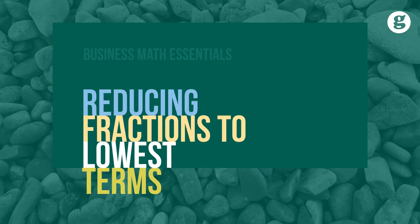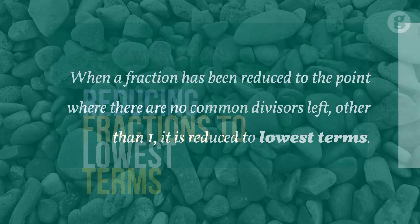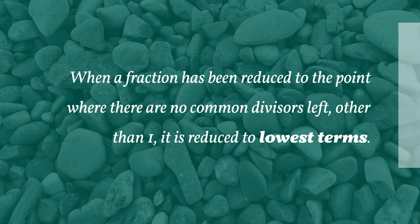Reducing a fraction means finding whole numbers, called common divisors or common factors, that divide evenly into both the numerator and denominator of the fraction. When a fraction has been reduced to the point when there are no common divisors left other than one, it is said to be reduced to lowest terms.